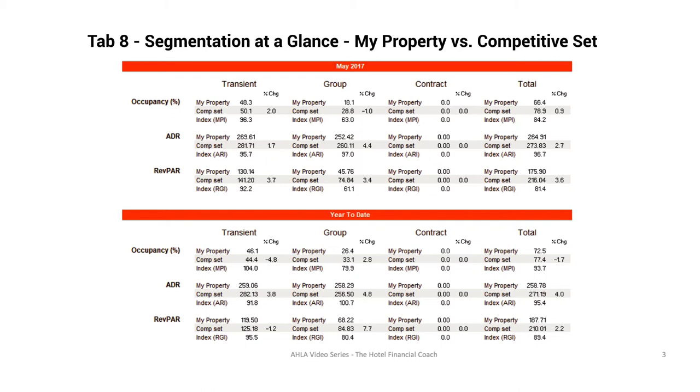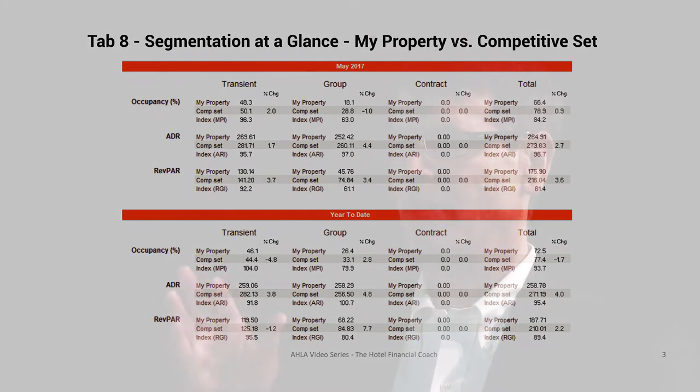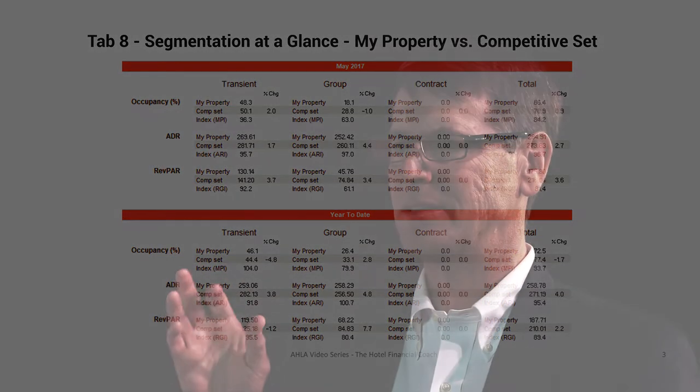REVPAR index is one of the two pillars typically found in management agreements. If a hotel misses hitting their REVPAR index target two years in a row, sometimes the owners can actually cancel the management agreement on the hotel and take down the flag.